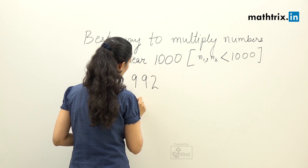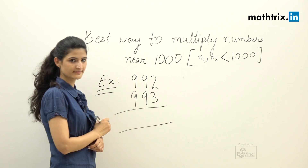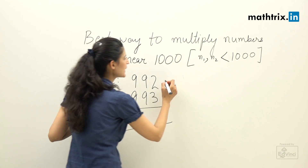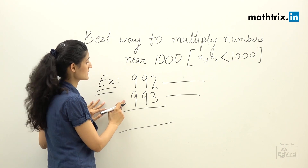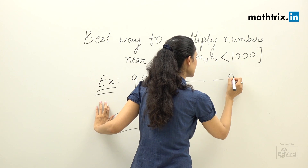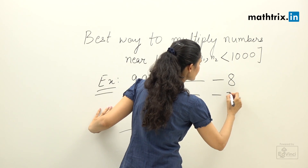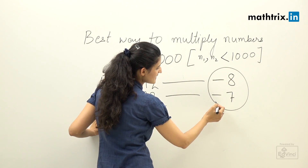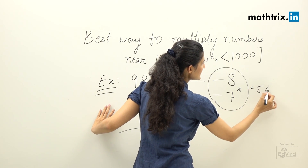Let's take another example where we are multiplying 992 and 993. Step number one: find the differences from thousand. The difference of 992 from thousand is minus eight, and the difference of 993 from thousand is minus seven.